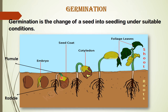A small root called the radicle comes out of the germinating seed and grows downward, later forming the root system of the plant. A small shoot called the plumule develops into the stem and leaves. Once green leaves are formed, the young plant becomes a seedling and can carry out photosynthesis to prepare its own food.